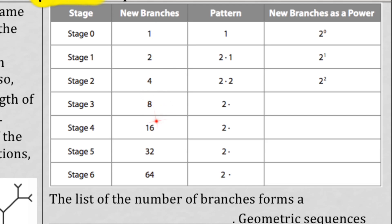If we keep that pattern going, stage 4 will have 16, stage 5 will have 32, and stage 6 will have 64. We can write all of those numbers in terms of 2, because every single time the tree is gaining two new branches. So what's happening is you start with 1 and multiply by 2 to get 2, then multiply by 2 to get 4, then 8, then 16, then 32, then 64.